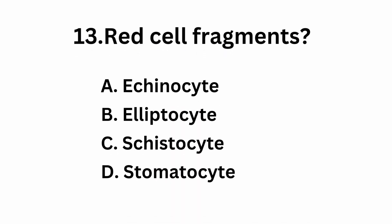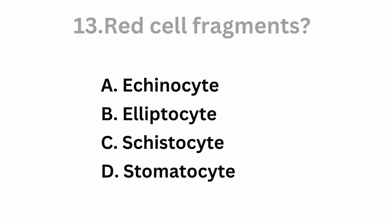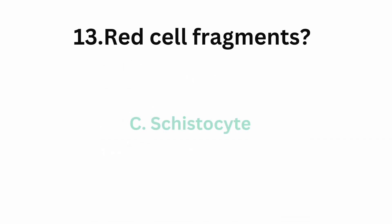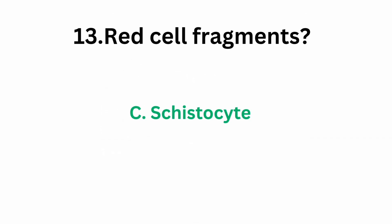Question number 13: red cell fragments. Option A, echinocyte. Option B, elliptocyte. Option C, schistocyte. Option D, stomatocyte. The correct answer is option C, schistocyte, which is also called a red cell fragment or fragmented red cell.